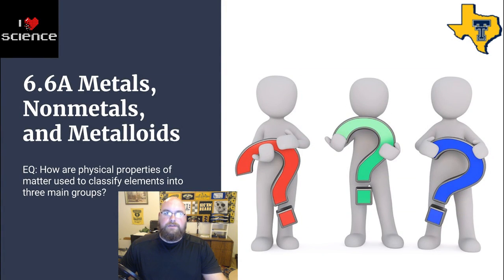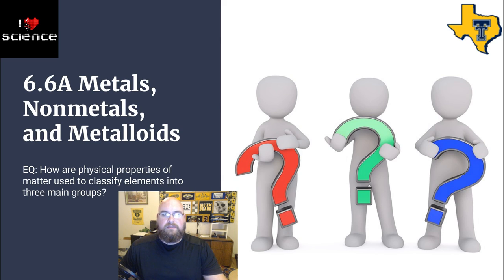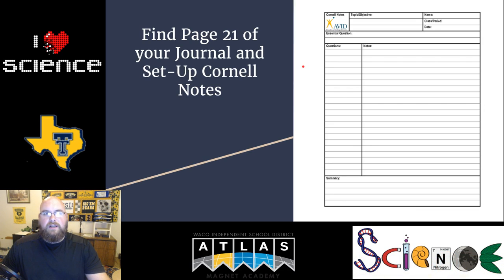Welcome back, science warriors, for the next video in our flip classroom series. Today we're going to be going through TEAK 6.6A: Metals, Nonmetals, and Metalloids. Our essential question for today is: how are physical properties of matter used to classify elements into the three main groups? So let's jump into it. First, find page 21 of your journal and set up your Cornell notes.